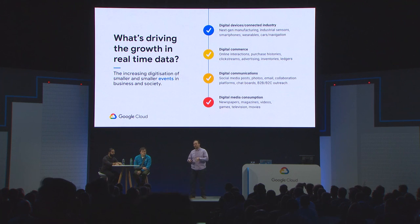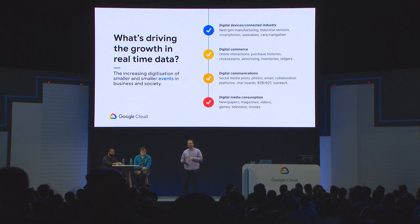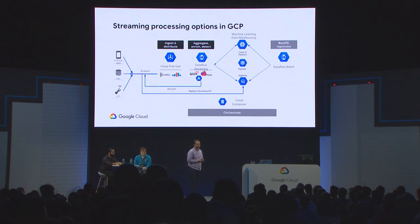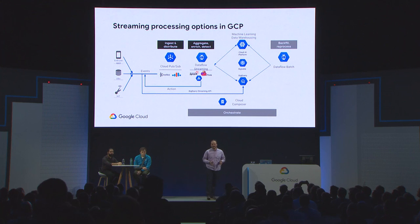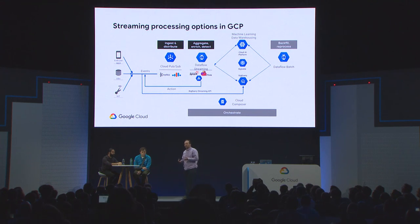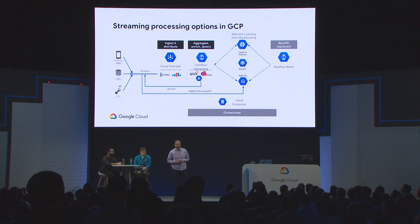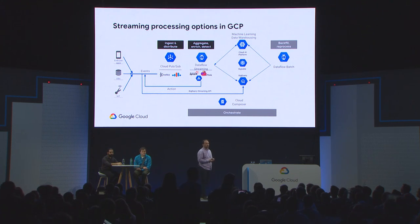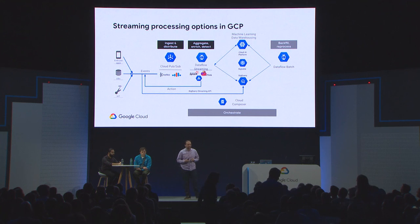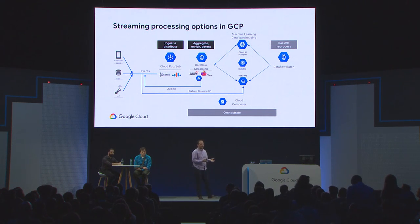When you go to Google Cloud and build a real-time streaming processing system, you would typically build something like this. You start by ingesting events using our globally available distributed ingestion service called PubSub. If you prefer Kafka, you also have choices — self-managed Kafka in GCP or the Confluent Platform. After ingesting your data, customers typically enrich, aggregate, and detect patterns on it, using Dataflow in streaming mode for this. If you prefer Spark and Flink, you can run Dataproc.